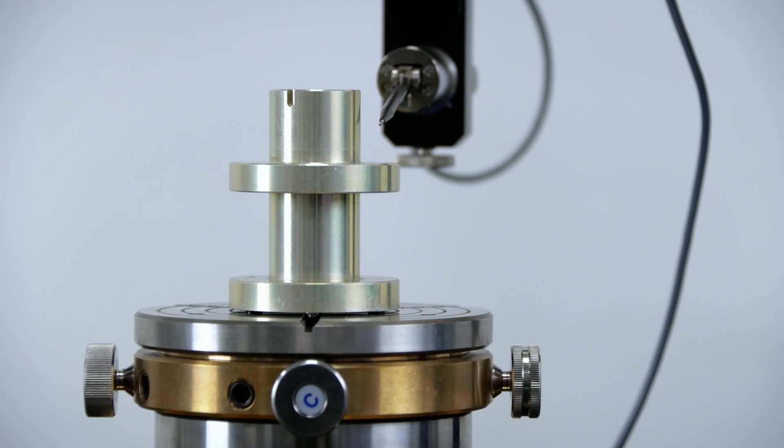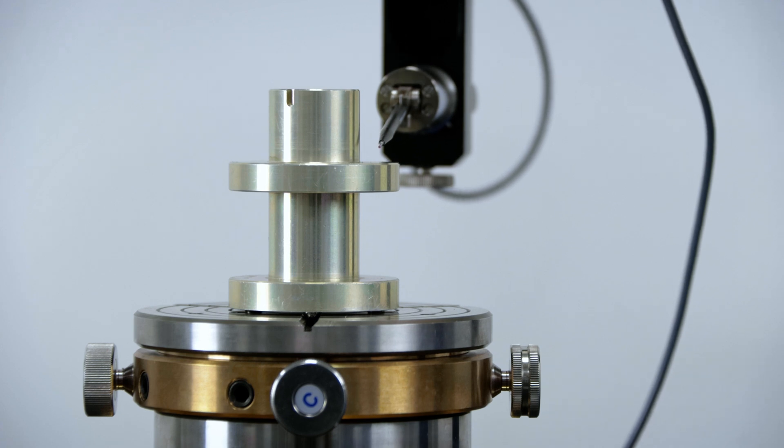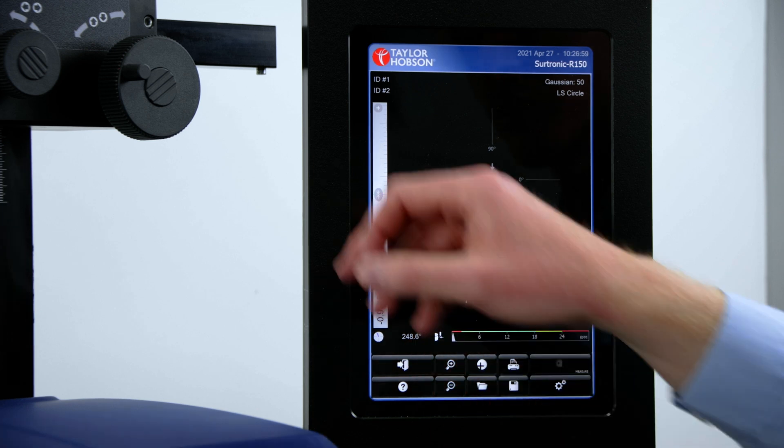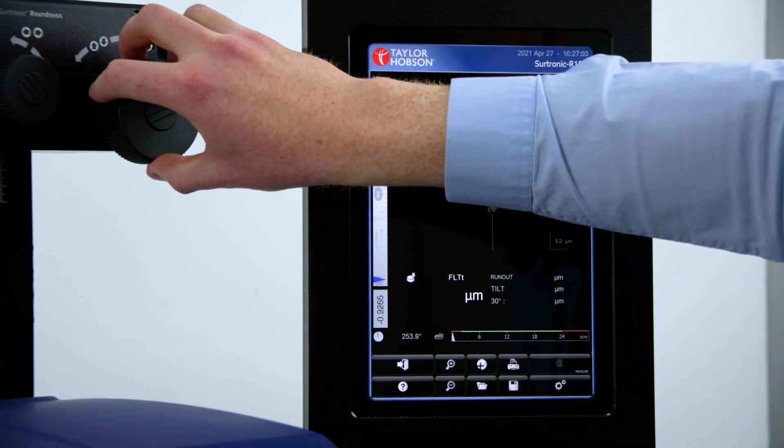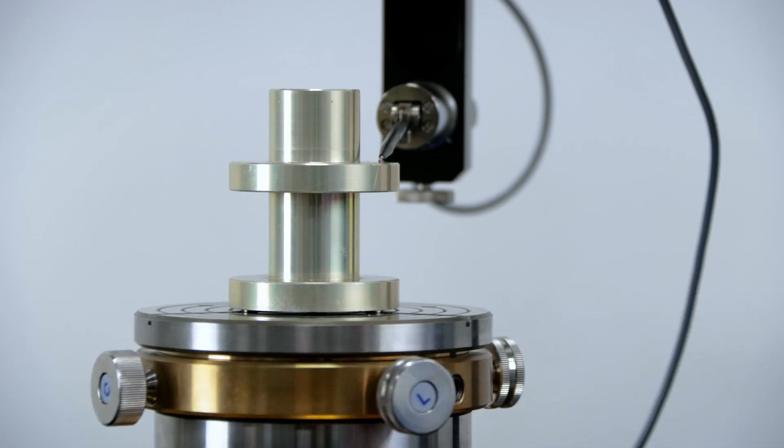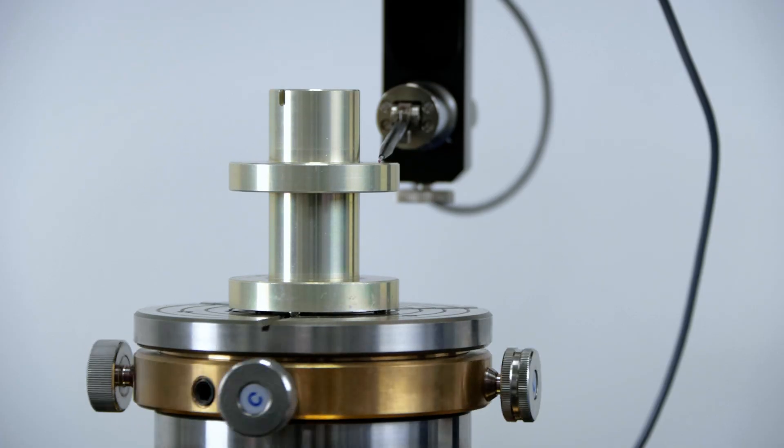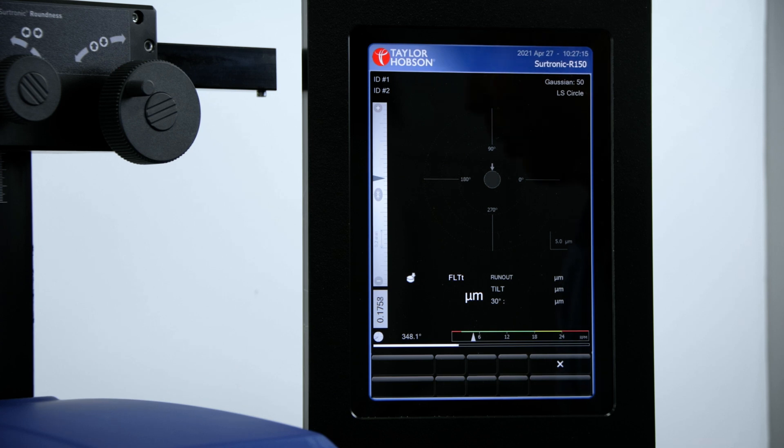To take a flatness measurement, we go into the flatness menu. I'm going to contact the gauge using the column. Once we're contacted, we can gently rotate the table and click measure. As before, the progress bar is moving forward.